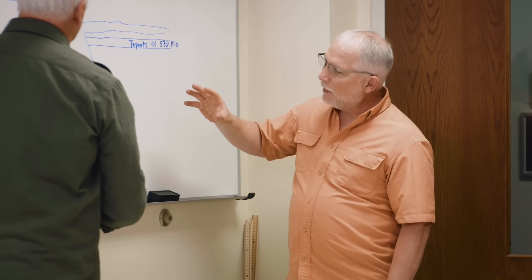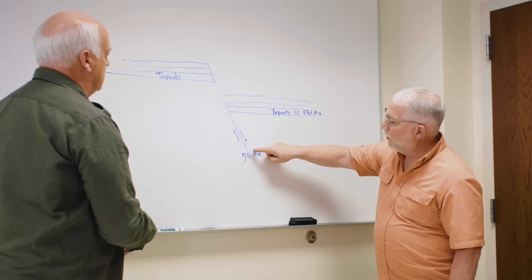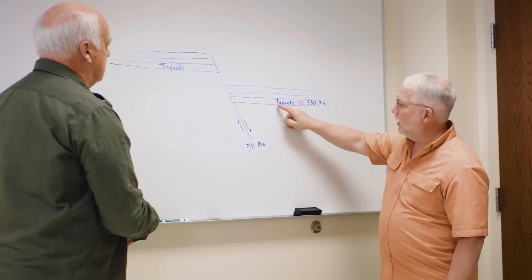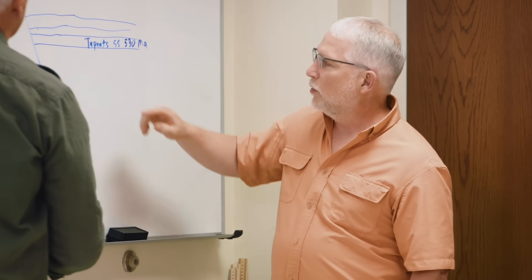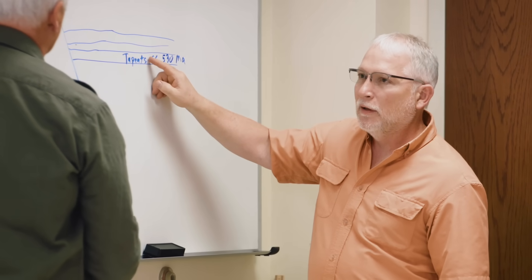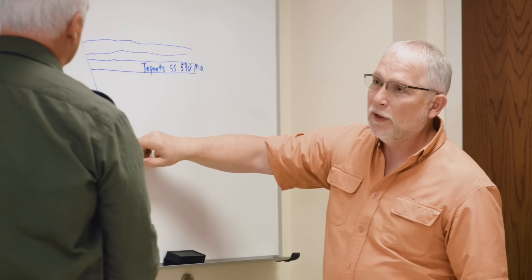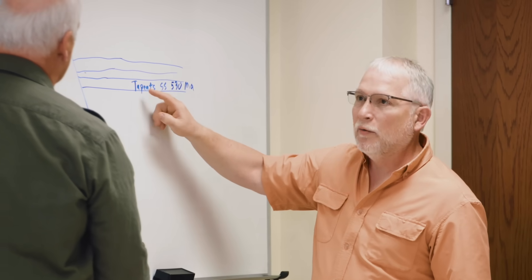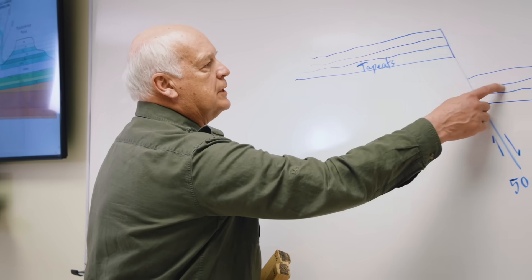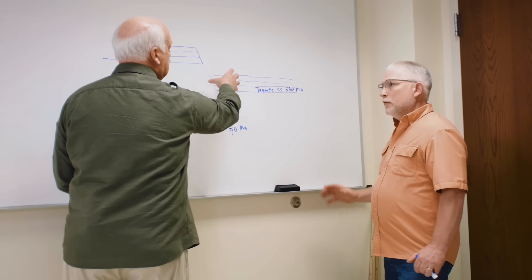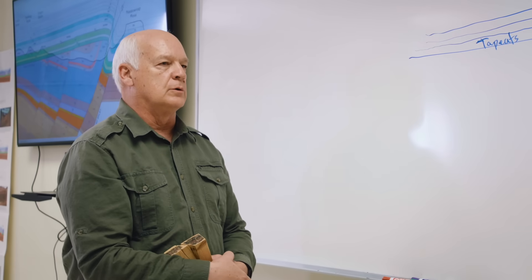Because we have the monocline, we think that the faulting event and the Tapeats were not very distant from each other in time. We think the Tapeats was laid down early in the flood, and the faulting happened right at the end of the flood — that is why we have the bending. The same would be true for each of the layers in that folding, going all the way up through, because they were still soft and folded rather than broke.